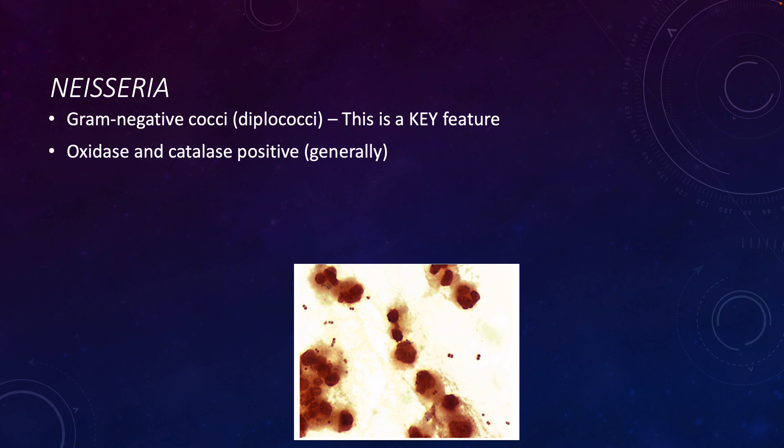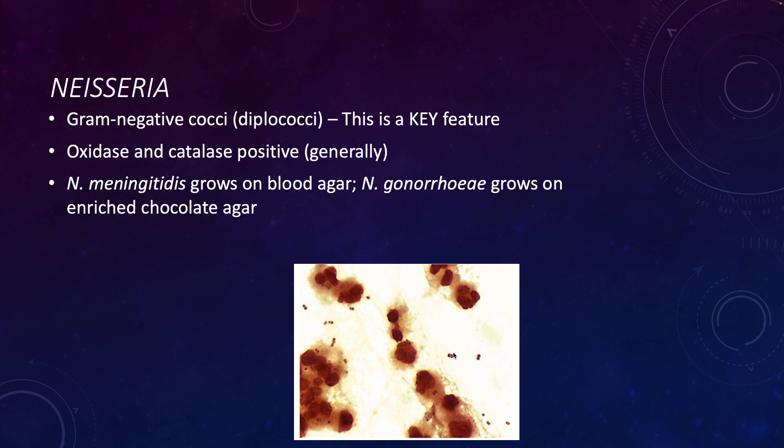The two species in this genus that are the major causes of infection are Neisseria meningitidis, which grows on regular blood agar, and Neisseria gonorrhoeae, which grows on the enriched chocolate agar. Chocolate agar is a type of blood agar that's been heated, which helps to release some of the factors in the blood that are helpful for bacterial growth.